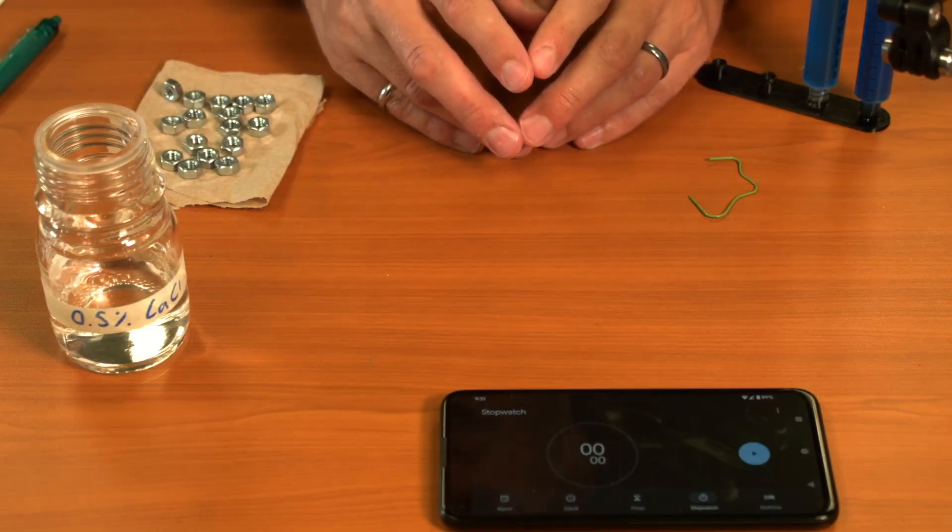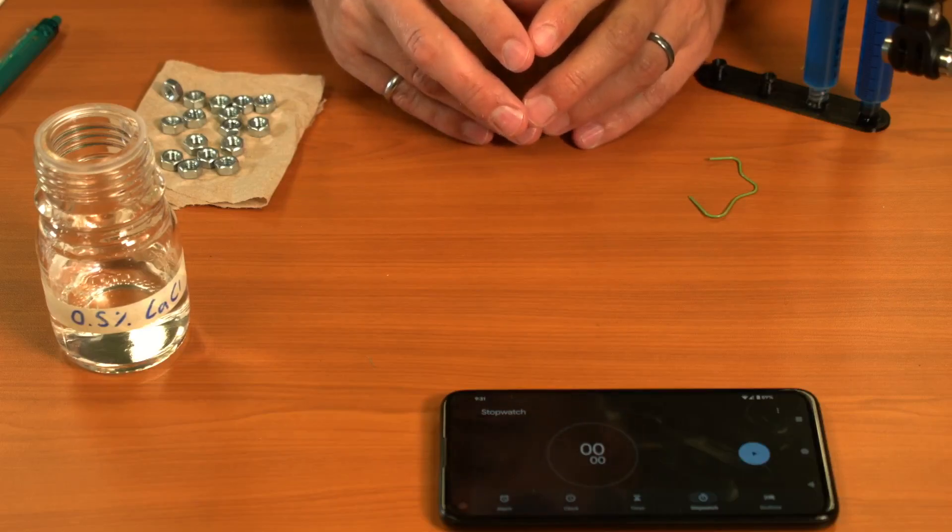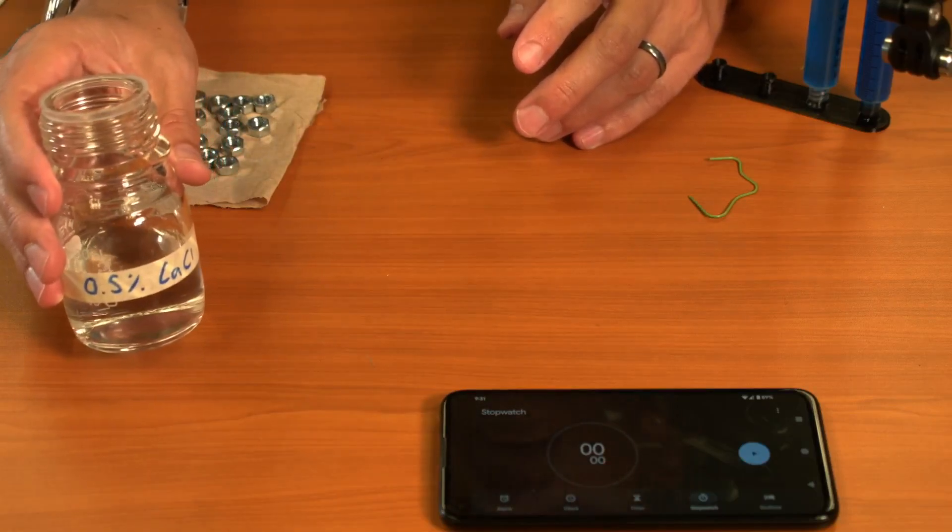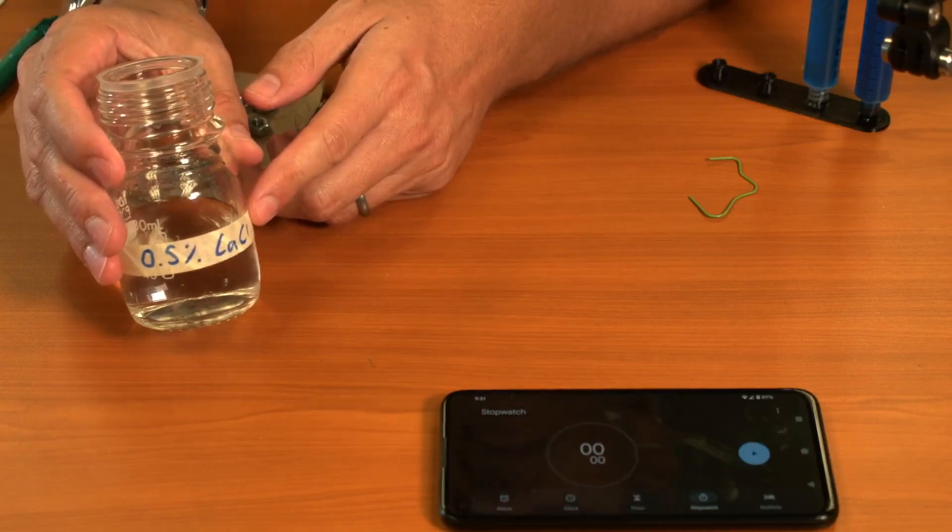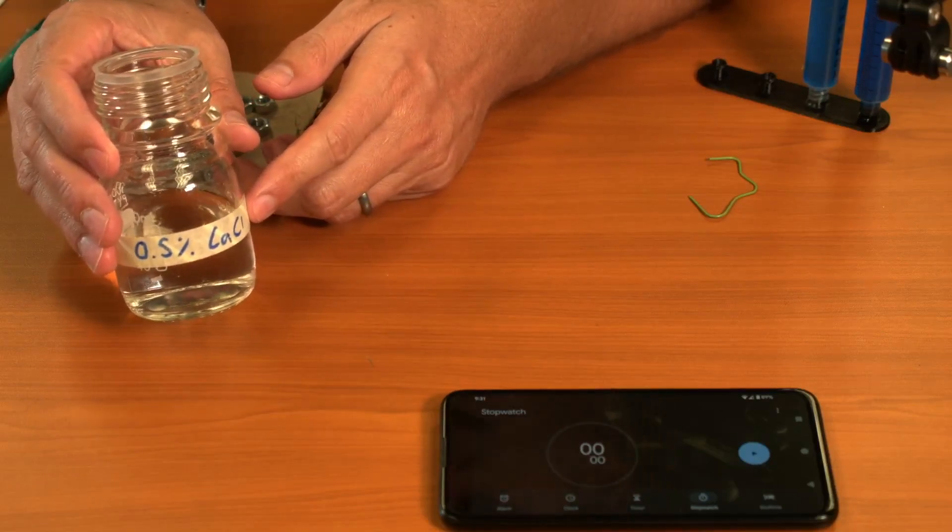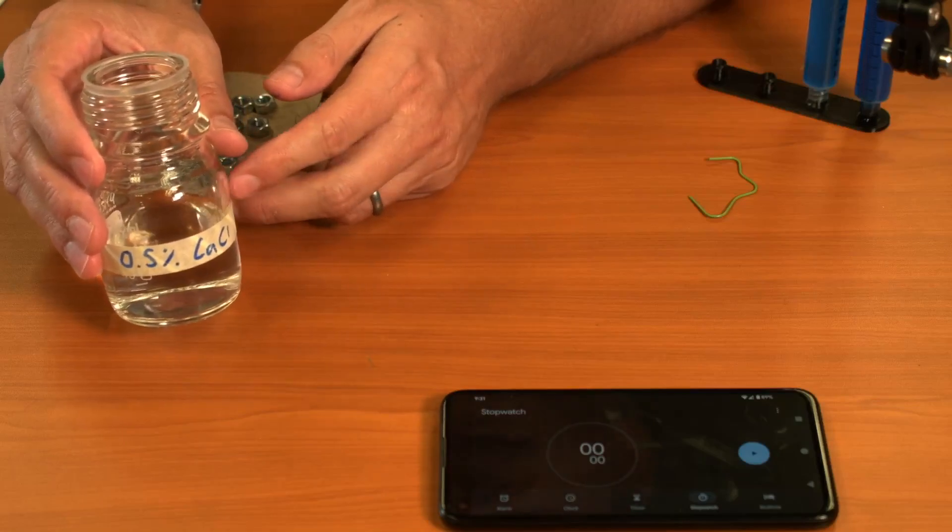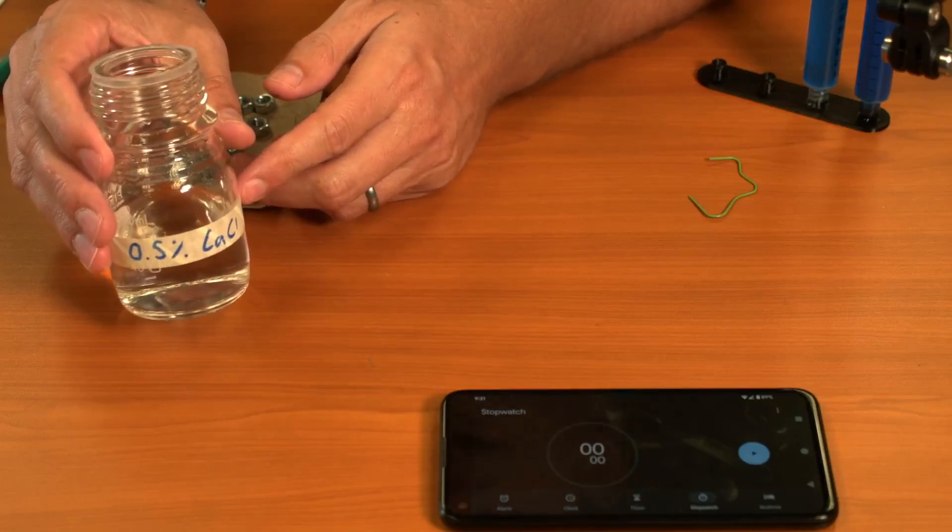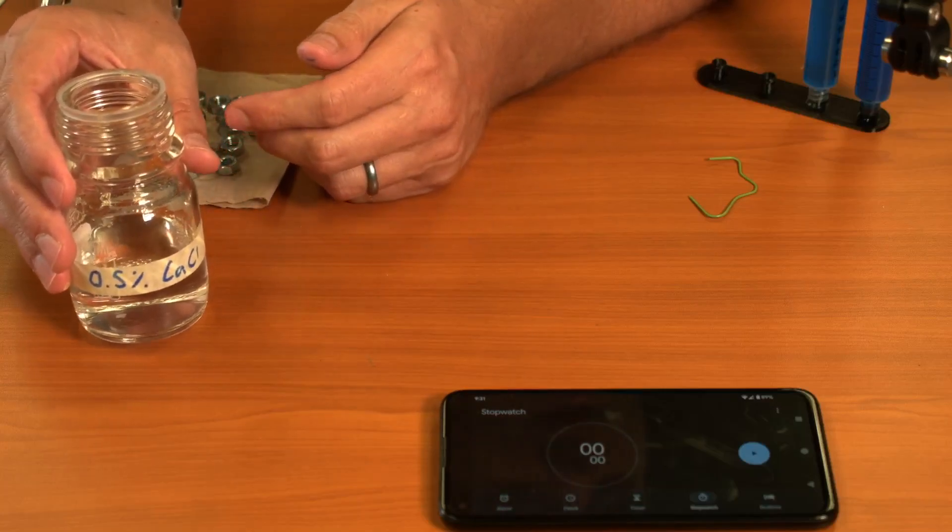Let's see what we need to get started here. We're going to need calcium chloride. This is a 0.5% solution, but anything from around 0.1% to 1 or 2% will work. The higher the percentage, the quicker this experiment should proceed.